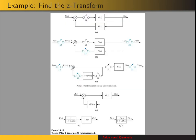Here's an example using those rules and the Z-transform for subsystems. We have a feedback system with G and H, and then we add a sampler before G. We want to find the Z-transform of this system. Using the rule about summing junctions: if the output of a summing junction is sampled, we can add phantom samplers to the inputs. That's what we've done with S2 and S3. Then for a subsystem with sampled input, we can add a phantom sampler to the output — that's what we did with S4. So this configuration is equivalent to the original.